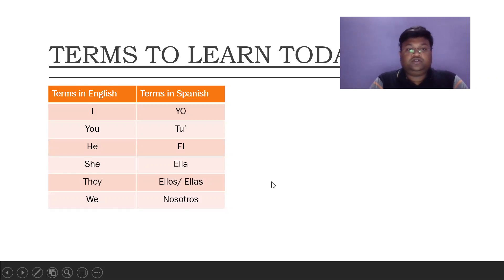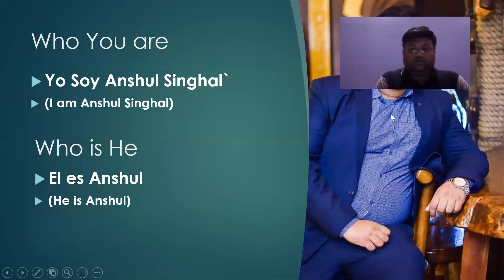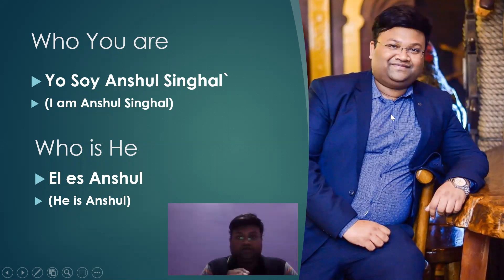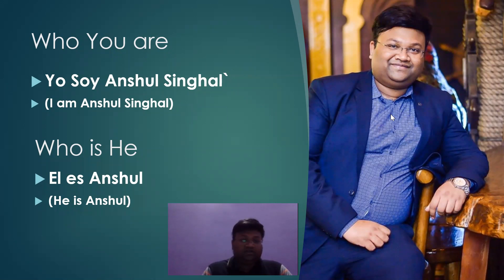Let me show you the pronouns one by one: yo, tú, él, ella. For example, if someone asks who you are, I will say 'yo soy Anshul Singh'. 'Yo' means 'I', 'soy' means 'am', and 'Anshul Singh' is my name. In English: 'I am Anshul Singh'; in Spanish: 'yo soy Anshul Singh'.